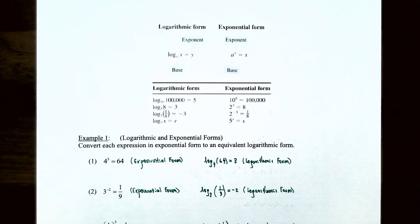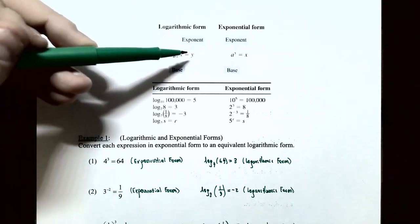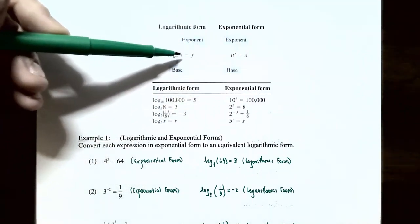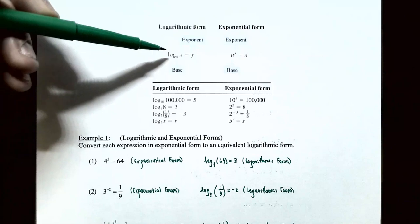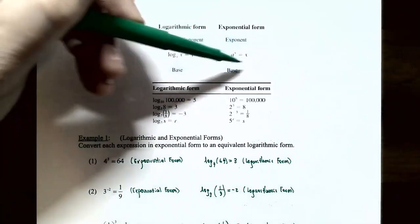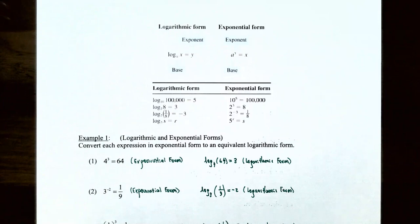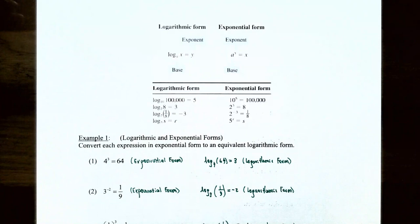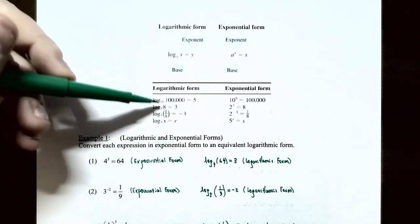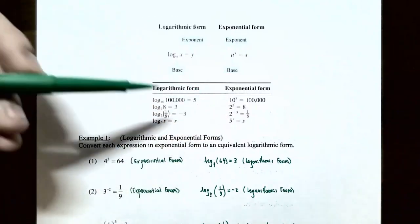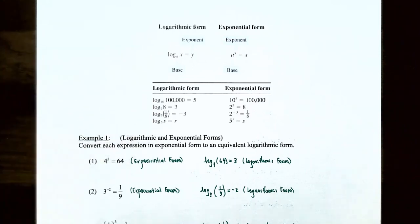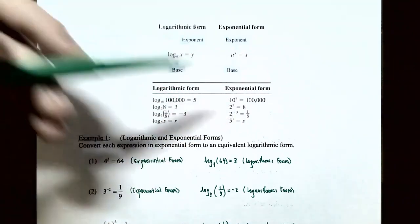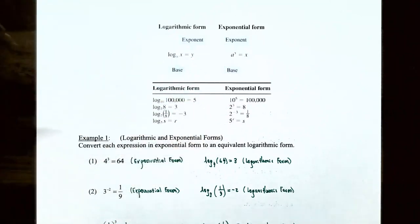In logarithmic form log_a(x) = y: y is the exponent, the base is a, and x is the argument. In exponential form a^y = x, the base is still a. For example: log base 10 of 100,000 = 5 because 10^5 = 100,000. Log base 2 of 8 = 3 because 2^3 = 8. Log base 2 of 1/8 = −3 because 2^(−3) = 1/8.